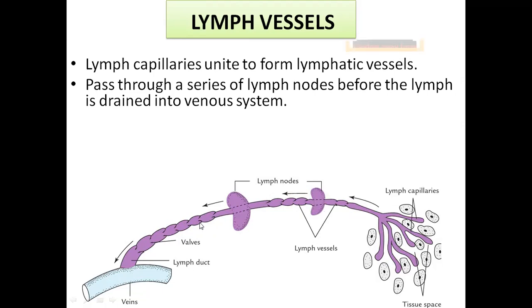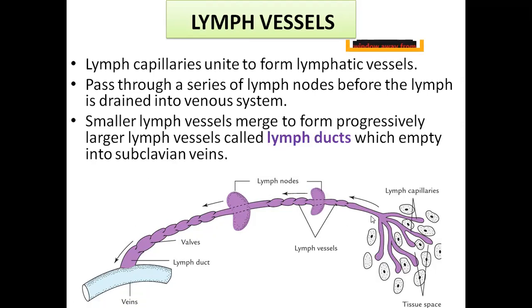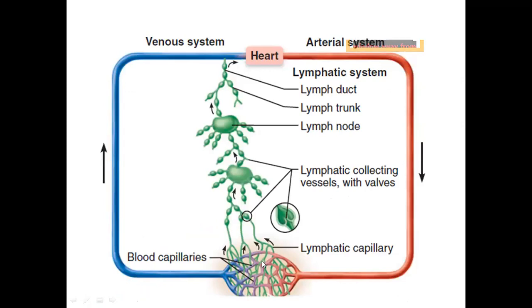Smaller lymph vessels merge to form progressively larger lymph vessels. These larger lymph vessels drain into lymph ducts, which finally drain into a vein — particularly the left subclavian vein — especially through the thoracic duct. Throughout the cardiovascular system, the green lines in tissue spaces are lymphatic capillaries, with lymph nodes and lymph vessels transporting lymph finally to the lymph duct, which is connected to the venous system so that lymph reaches the heart.